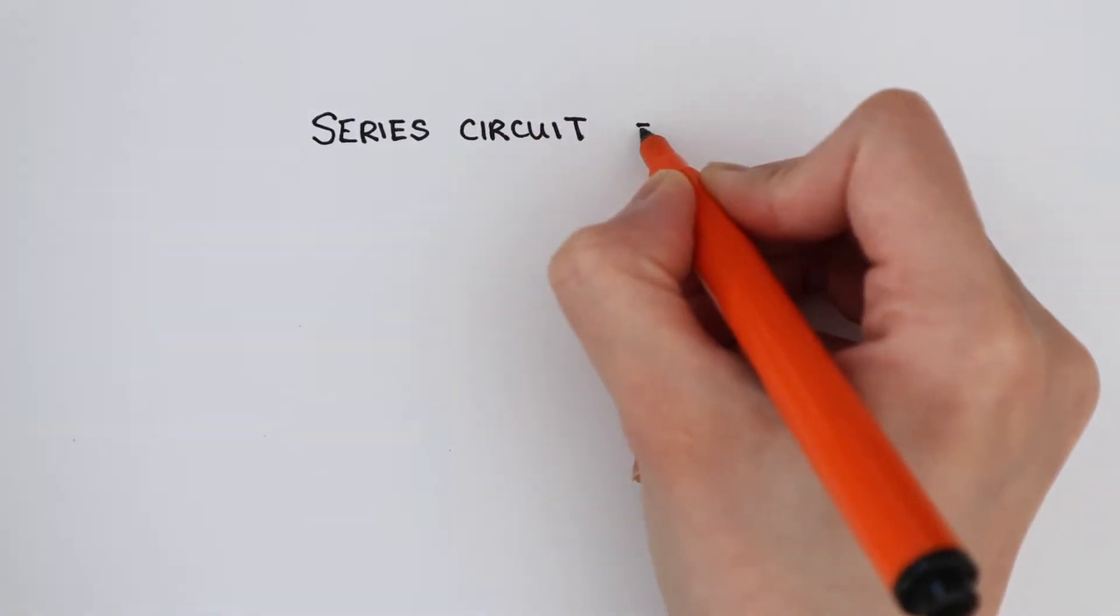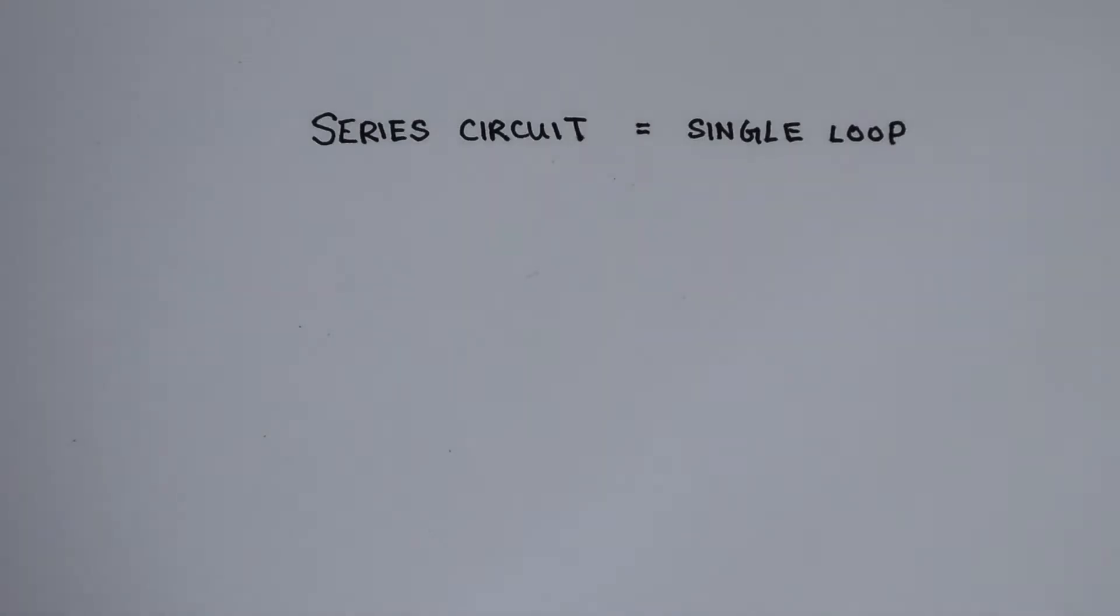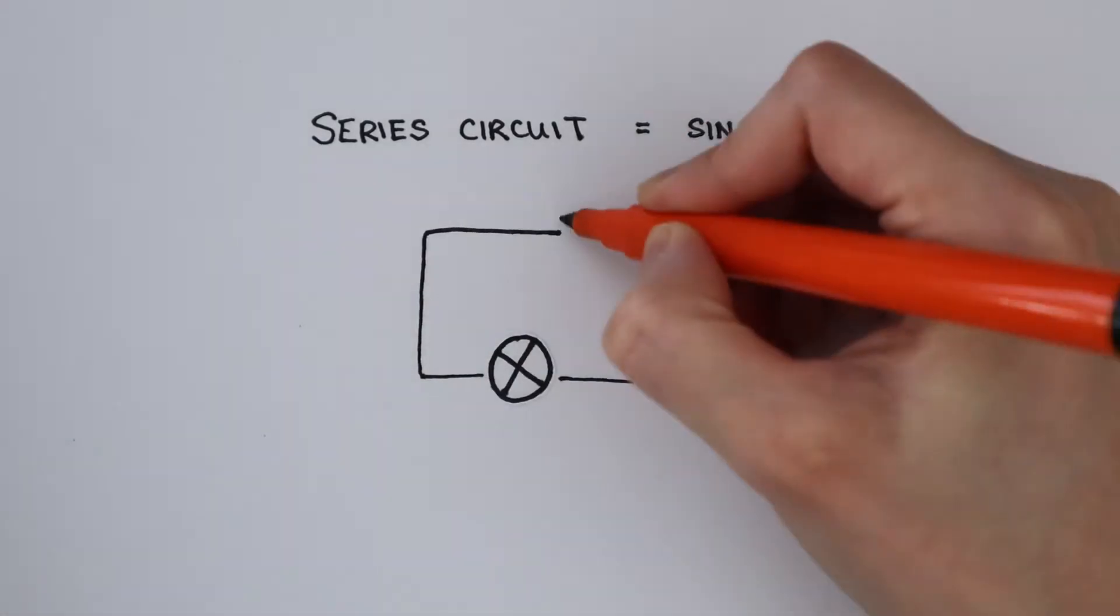In a series circuit, all the components are connected in one single loop. Here's an example. These two light bulbs are connected in series to a cell.